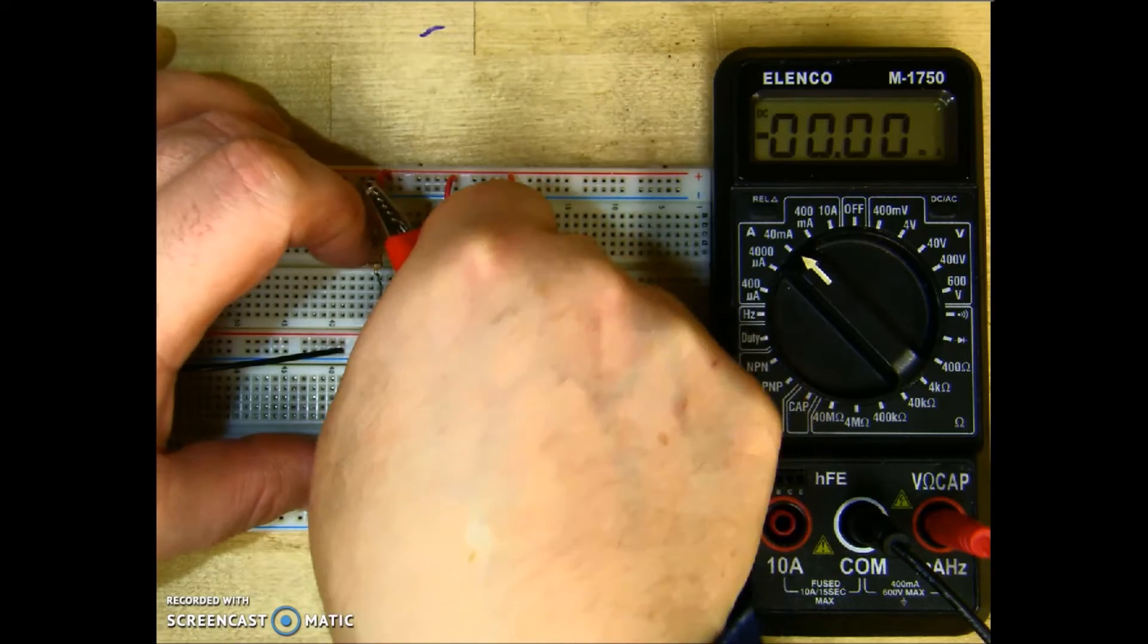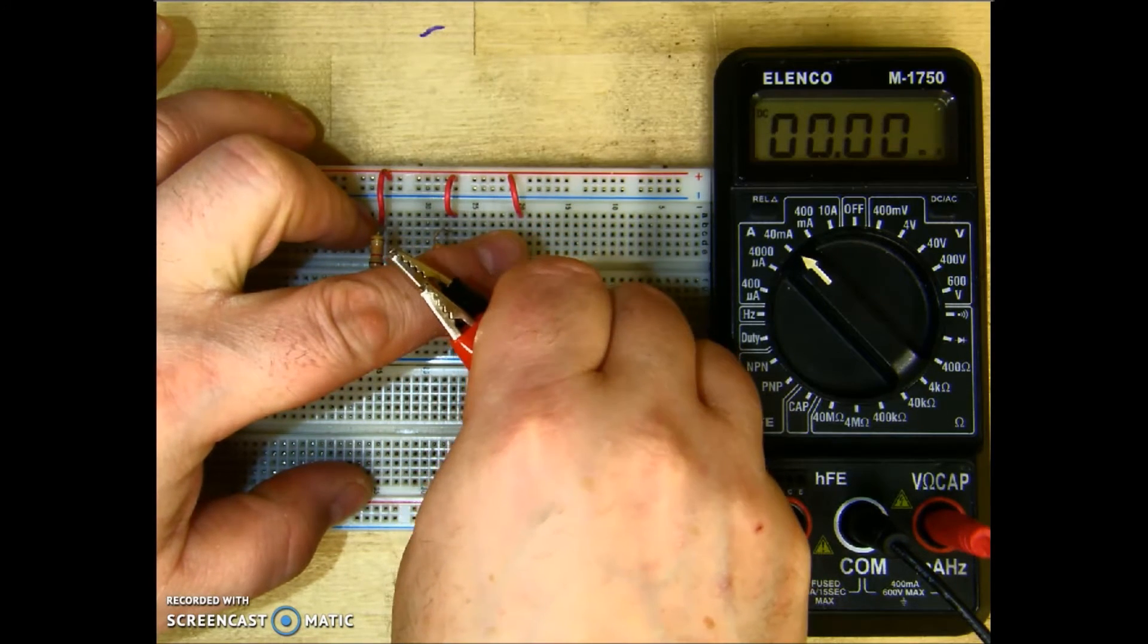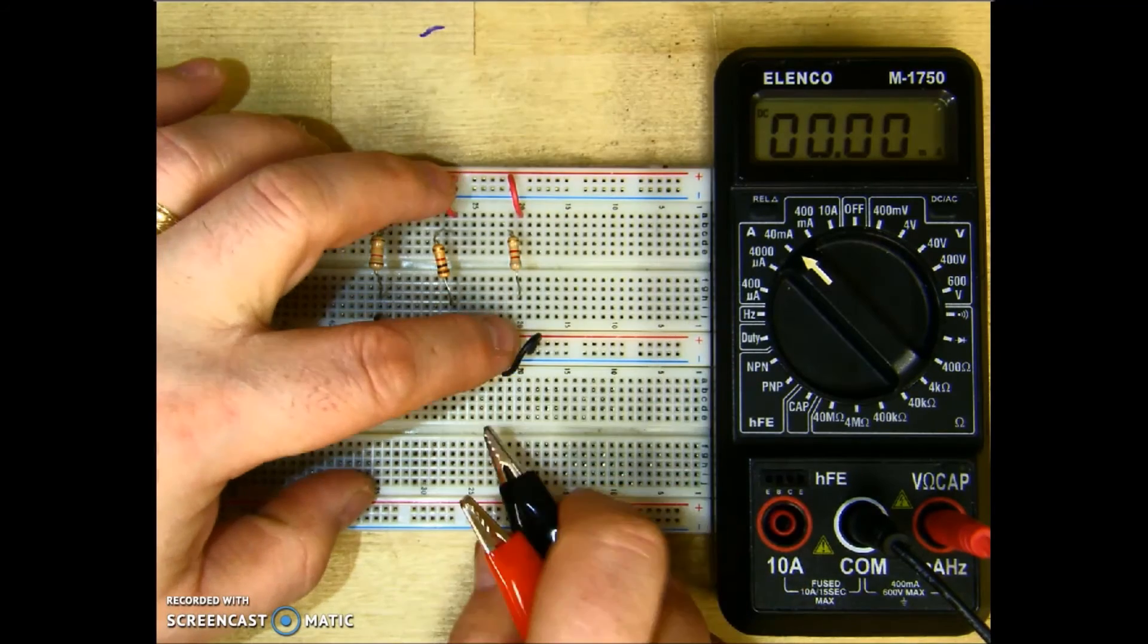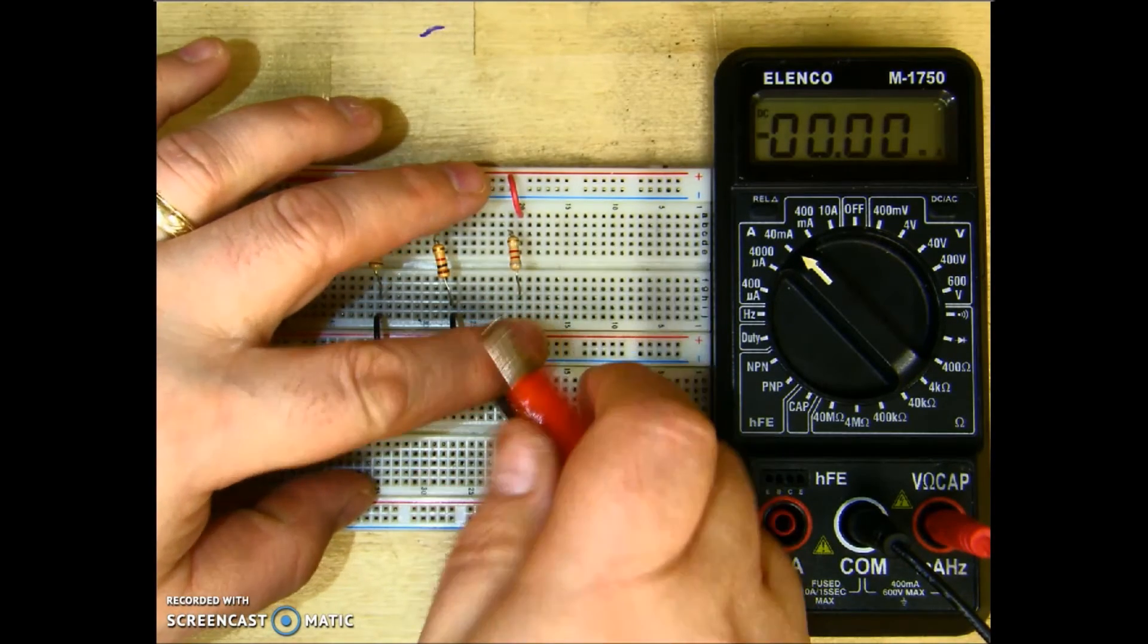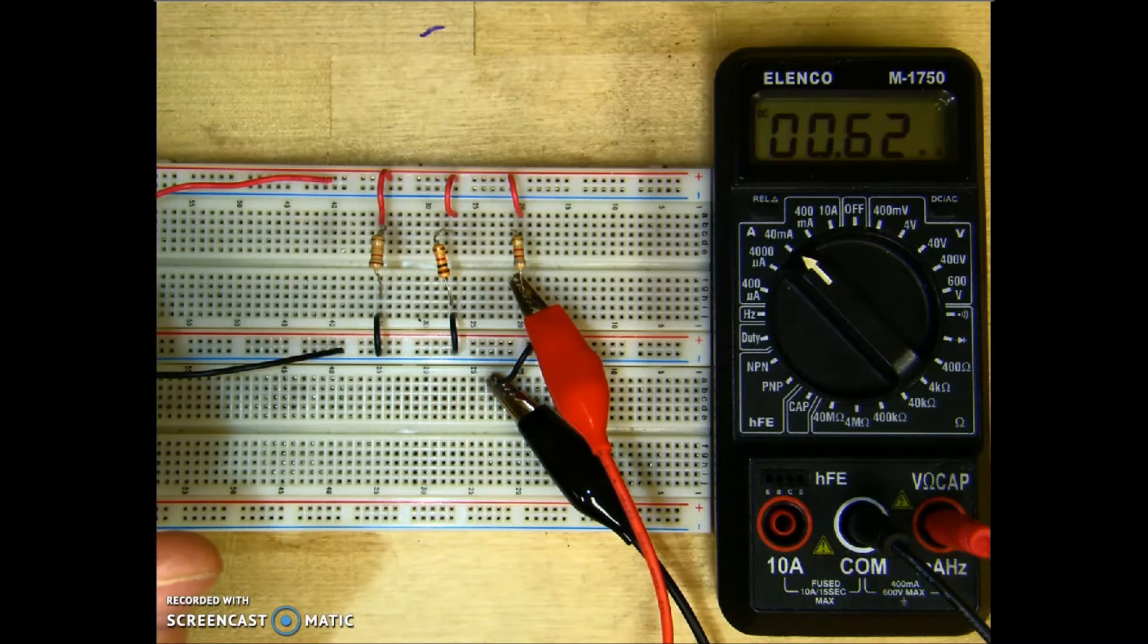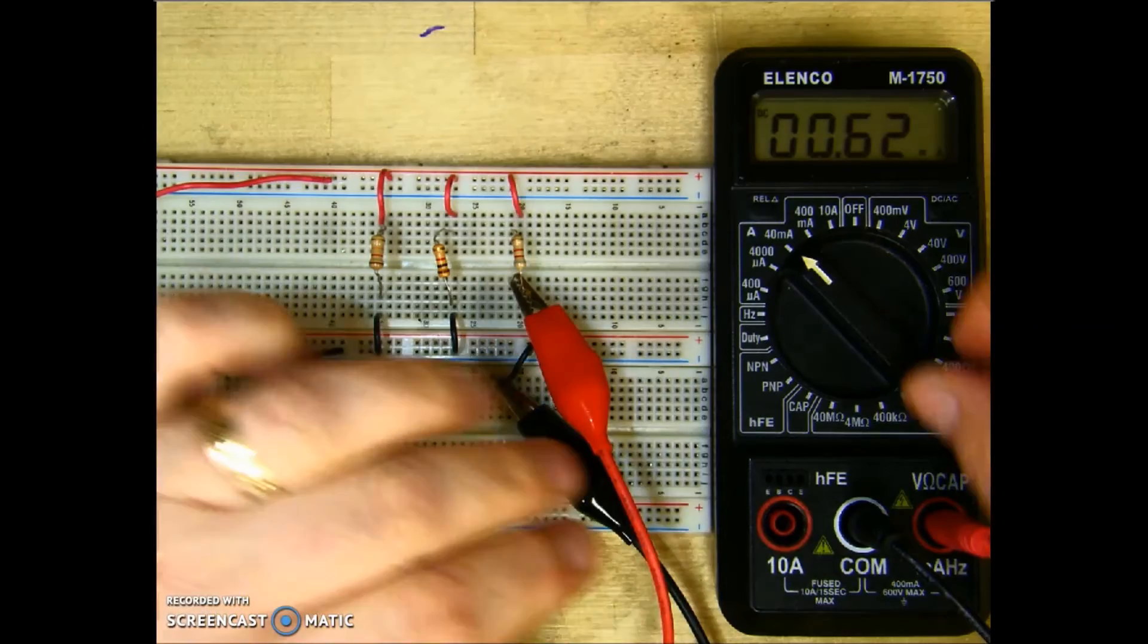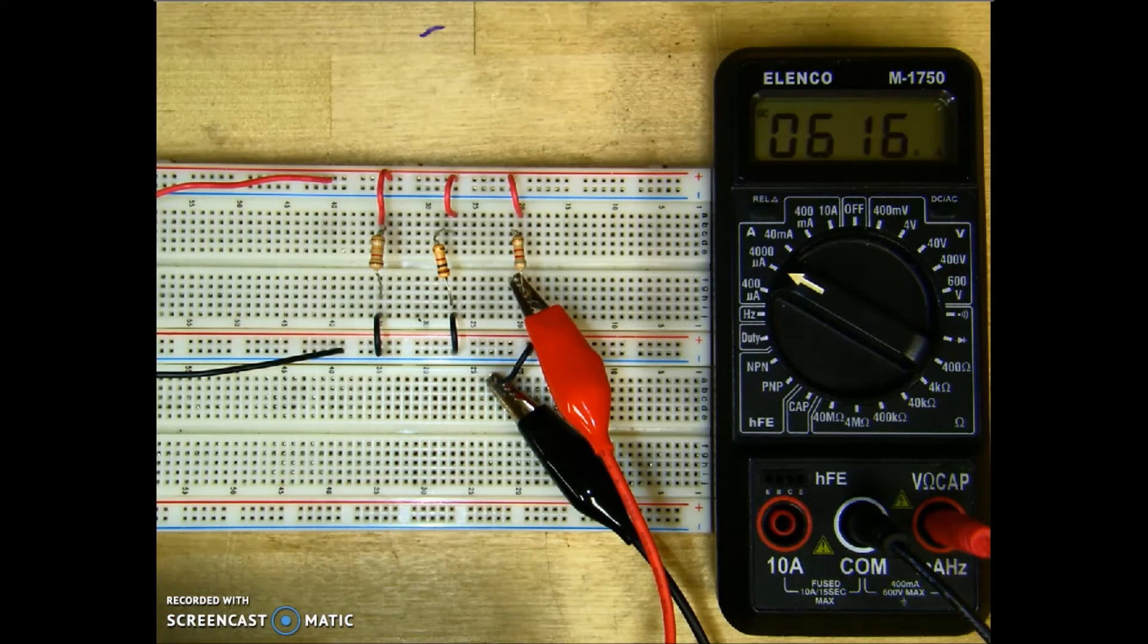Put R2 back into the circuit and break the circuit at the bottom of R3. Plug my meter up where the break is, and I get a current reading of 0.62 milliamps. So I'll go ahead and turn my meter down, and I get 616 microamps of current through R3.